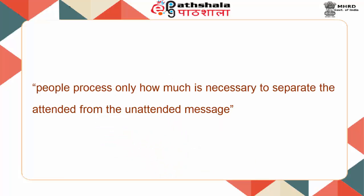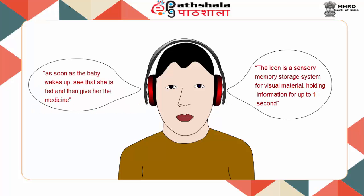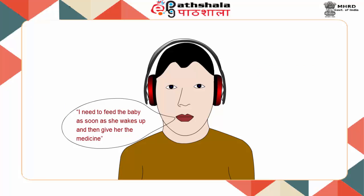According to Treisman, people process only as much as is necessary to separate the attended from the unattended message. For instance, if two messages differ only semantically, we process both through the level of meaning and select which message to attend to based on this analysis.